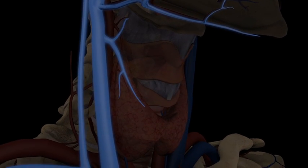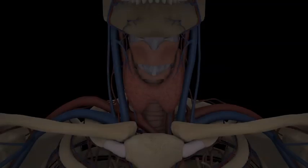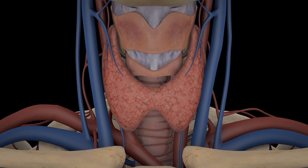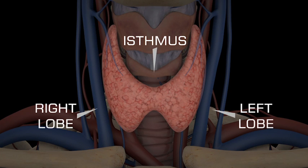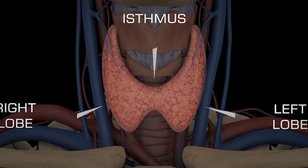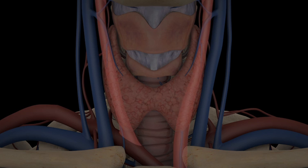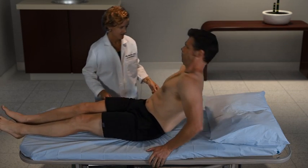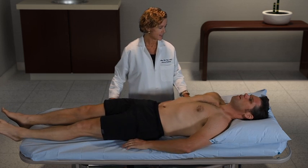The internal jugular vein descends to the level of the first thoracic vertebra. The thyroid gland consists of two lobes — the left and right lobes — which are connected by the isthmus. The isthmus lies anterior to the trachea. Note the relationship of the common carotid artery with the lateral aspect of the thyroid.